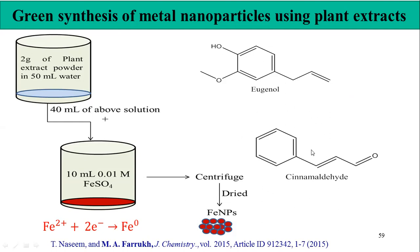Two of these polyphenolic compounds are given here as an example. The procedure is: first, you take the plant powder, extract it using a solvent, and then use this extract by putting it into the metal source — in this case iron(II), which is converted into iron in the zero oxidation state. After that, you centrifuge to obtain the final iron nanoparticles.